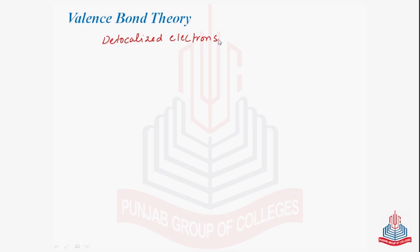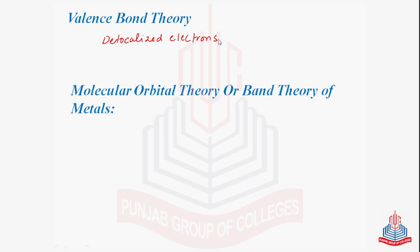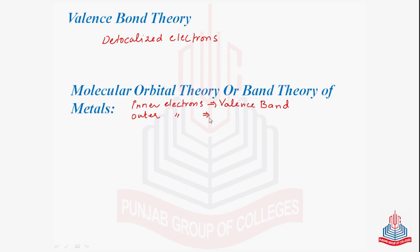Moving on to the band theory of metals, which is also called the molecular orbital theory or band theory of metals. According to the band theory, orbitals overlap to form energy bands. The inner electrons, which we can also call core electrons, form the valence band, while the outer electrons, which we call valence electrons, form the conduction band. The gap between the valence band and the conduction band is called the forbidden energy gap.